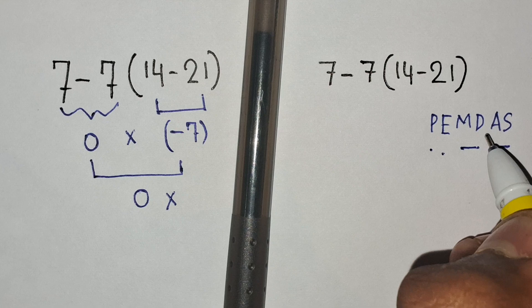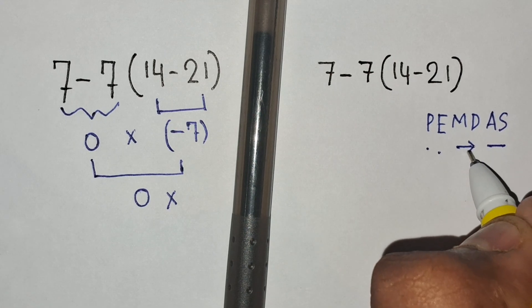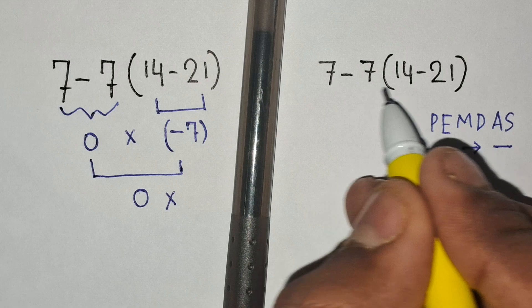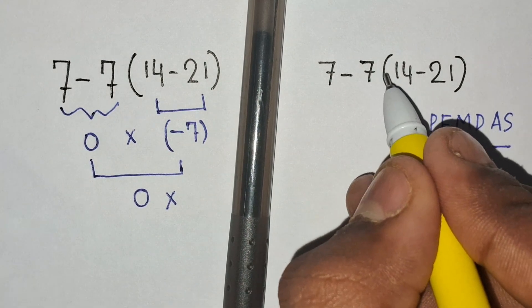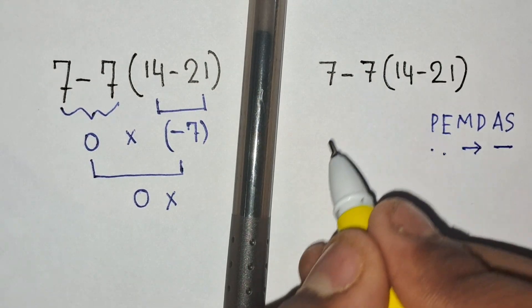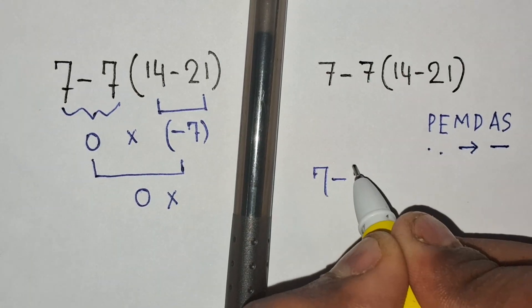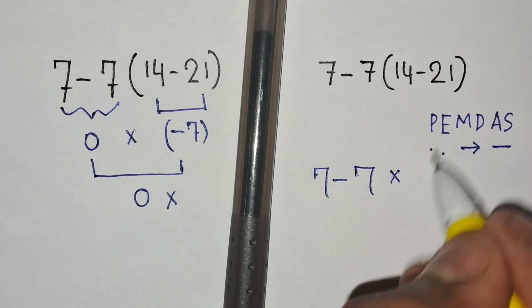We have to solve from parentheses to subtraction, left to right. According to this rule, first we have to solve this bracket, then this multiplication, and finally the subtraction. So 7 minus 7 times 14 minus 21.